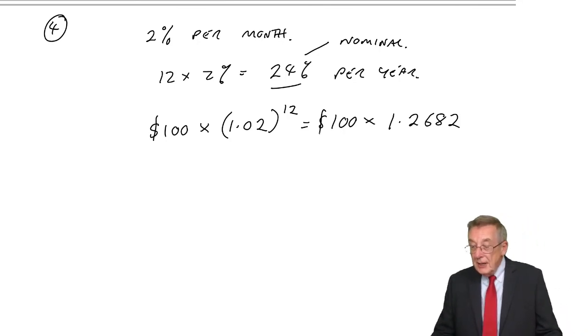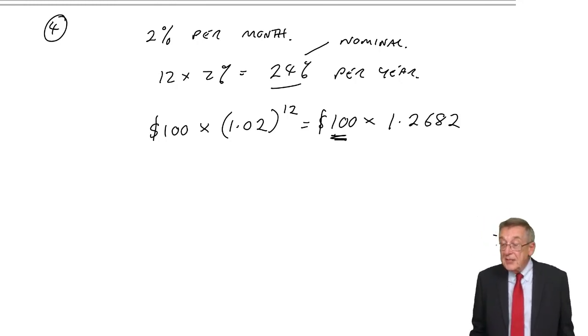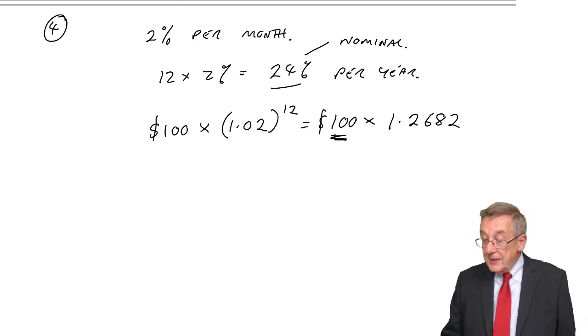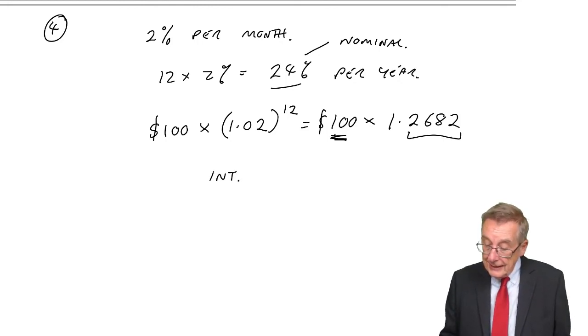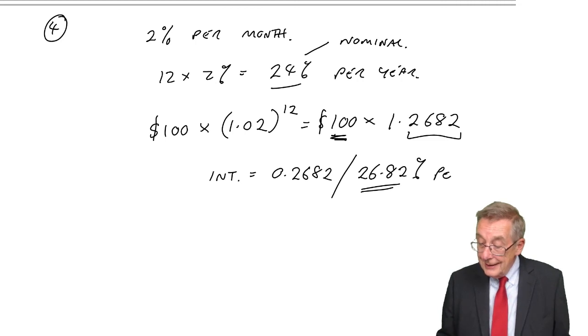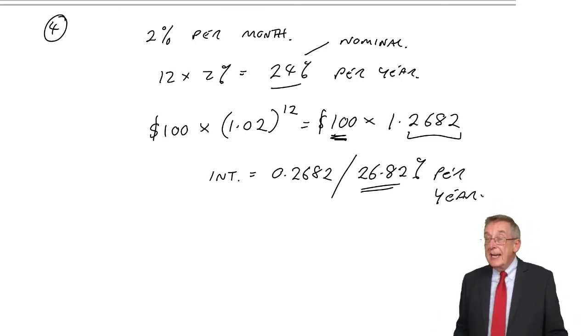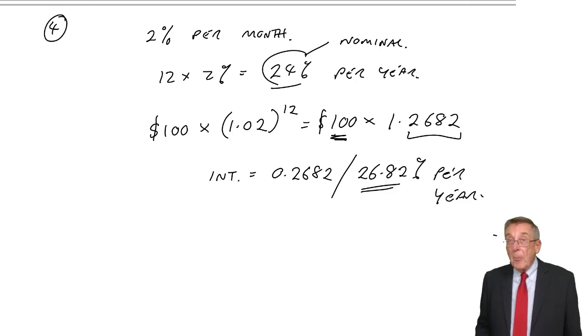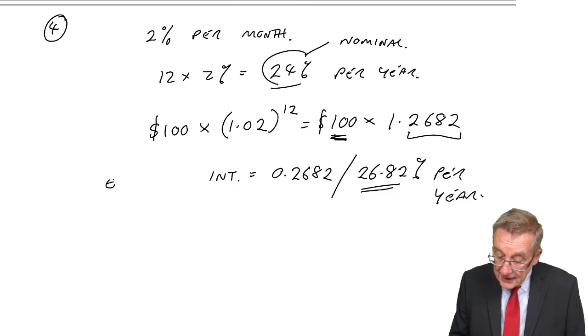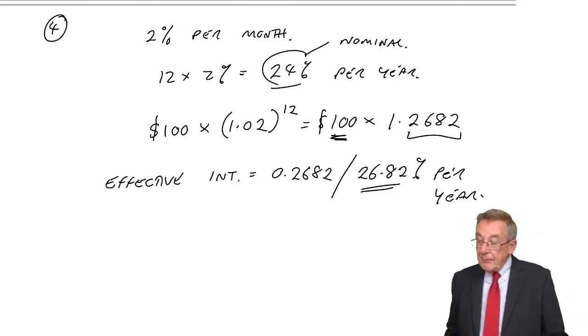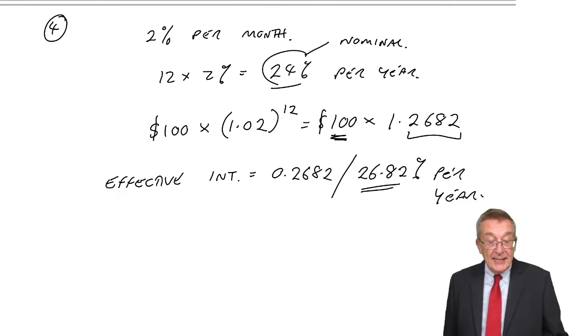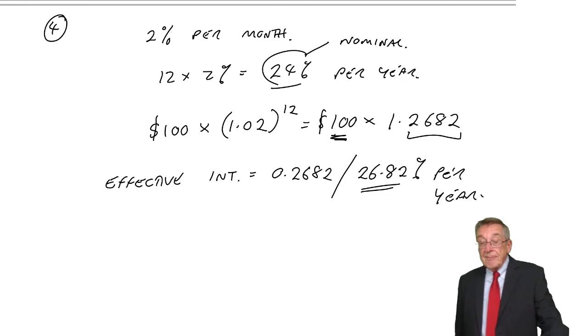And so within the year, the effective is how much is the interest. But look at this, you see, if you borrowed or put on deposit 100, and if after a year the amount's grown to 100 times that, it means that the interest is 0.2682, or 26.82% per year. And that's really the yearly interest rate. It tried to make it look cheap by saying 12 times 2 is 24. But it's actually more than that, the effective interest rate is 26.82% per year. And as you can see, it's also called the annual percentage rate.